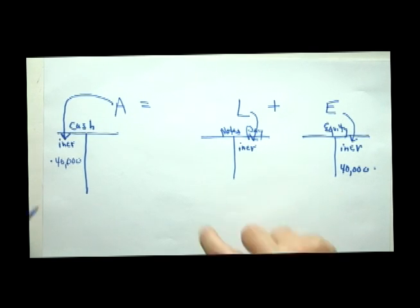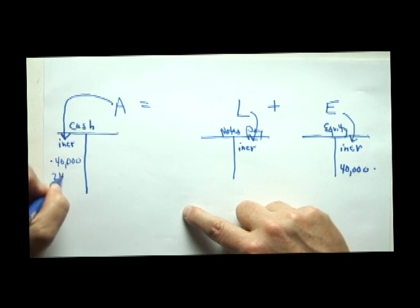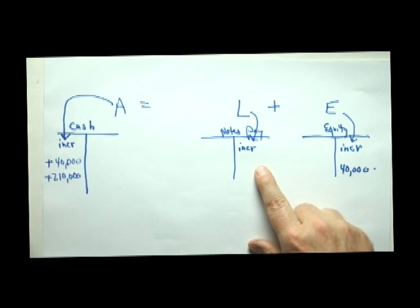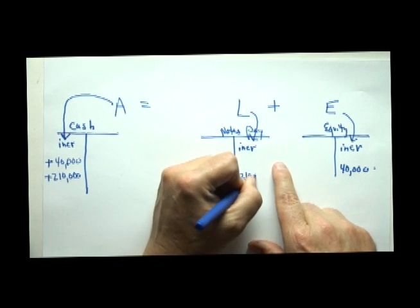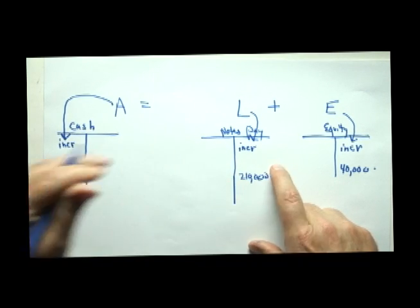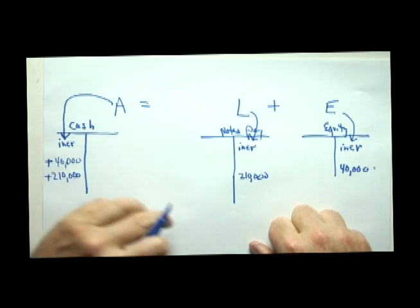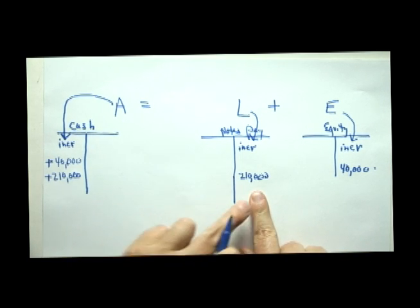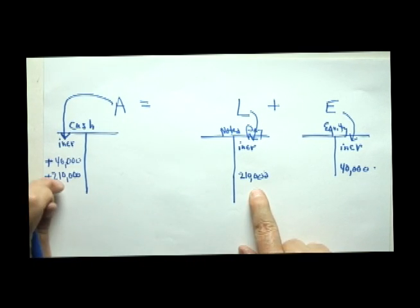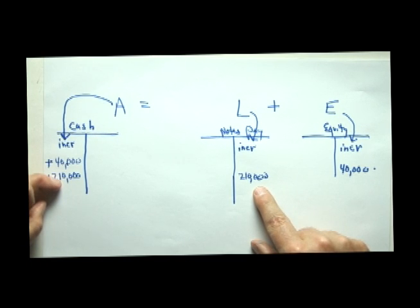Now, the second transaction, when we received $210,000 from the bank, cash went up and the note payable increased. And so here, cash went up, it's an asset, it went on the left. Notes payable is a liability, it migrated to the right. Does left equal right? Yes, it does. We balance.